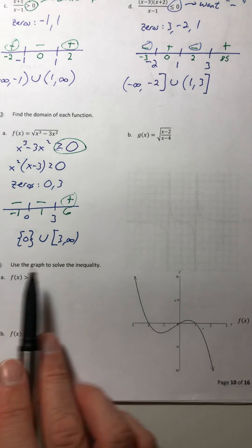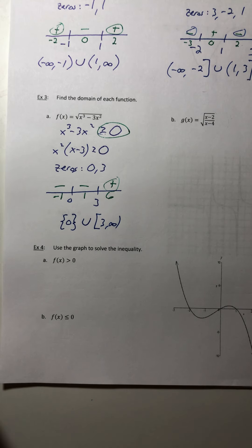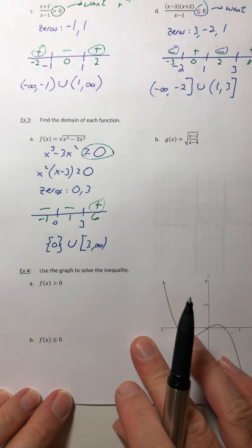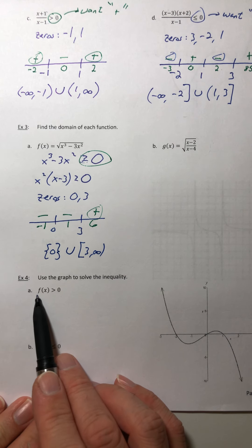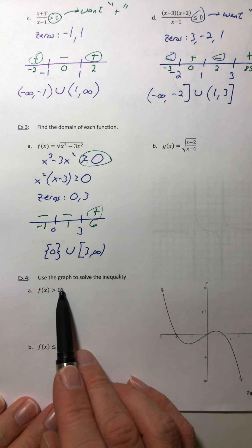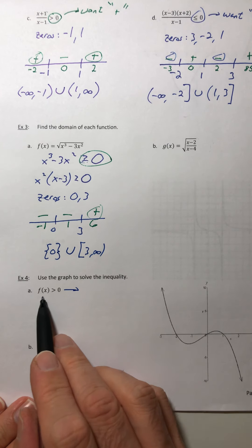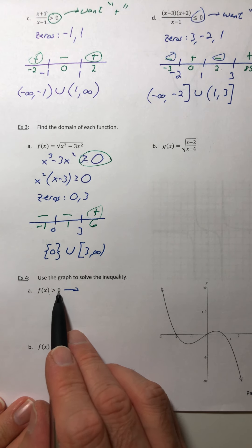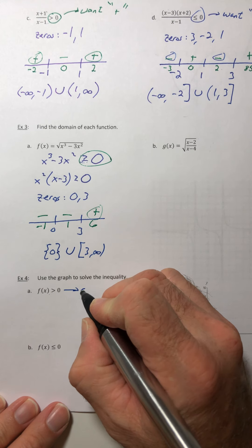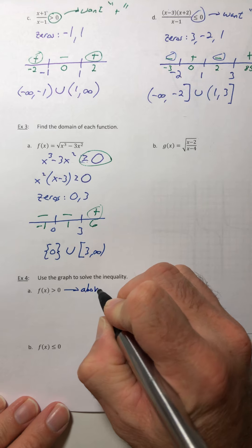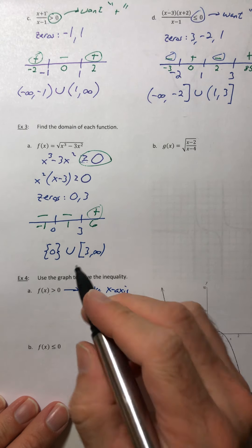So let's move on to example four, using a graph to solve an inequality. So graphs are kind of nice to use if you've got one. So I want where the function is greater than zero. So that means I want to know where the y values are bigger than zero or where the y values are positive. So I want to know what sections of the graph are sitting above the x-axis.